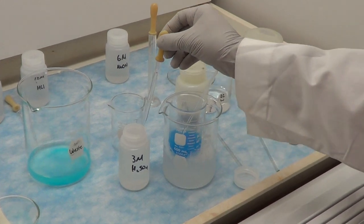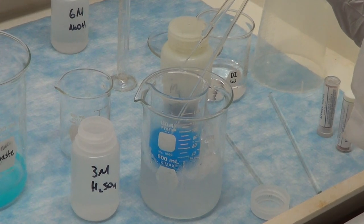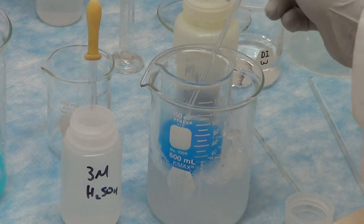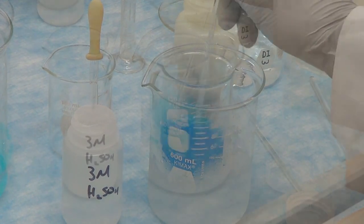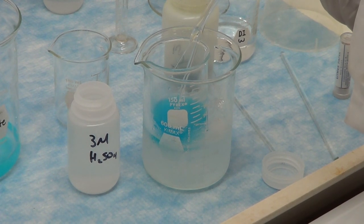We will then add three molar sulfuric acid dropwise with stirring to dissolve the precipitate. This is an acid base reaction where acid and base react to form salt and water. Here copper hydroxide reacts with sulfuric acid to form copper sulfate and water.